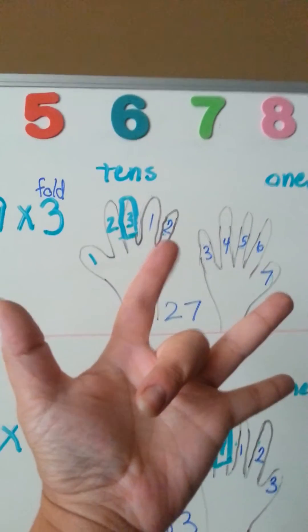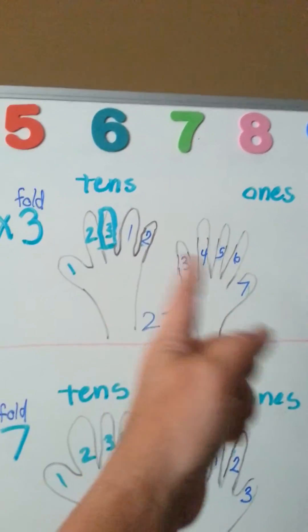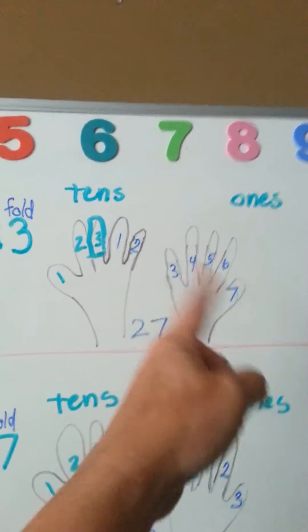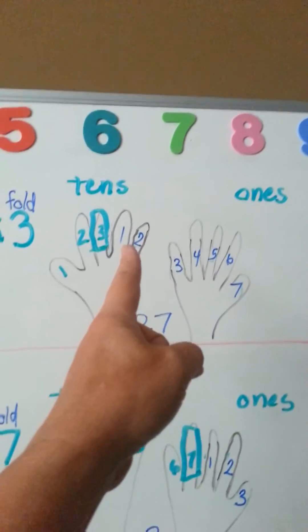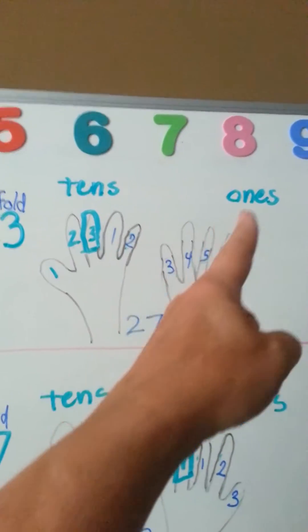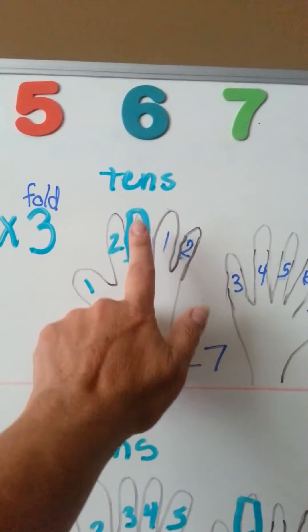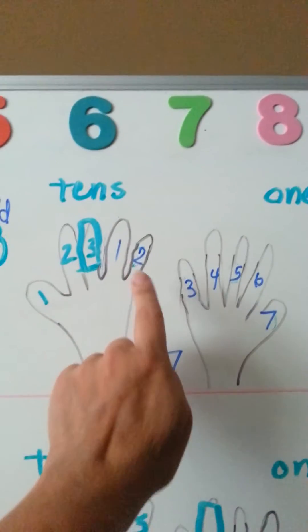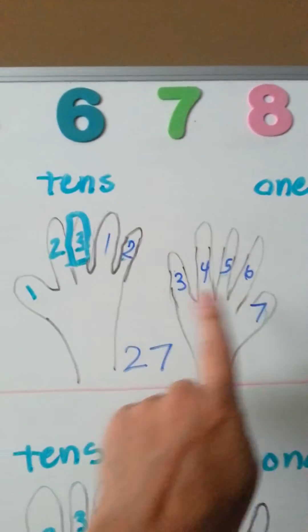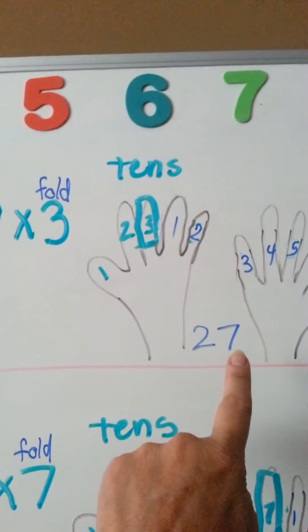There's 2 on this side, that's the tens, and whatever numbers are left on the other hand, these fingers are the ones. So by putting down the third finger, you're left with 2 and 7. So 9x3 is 27.